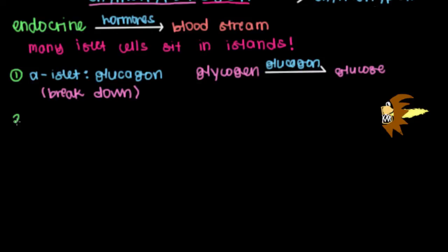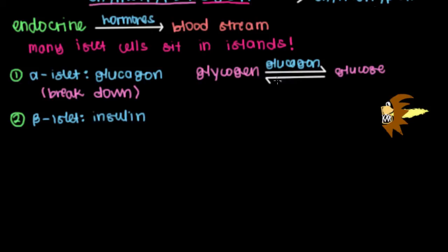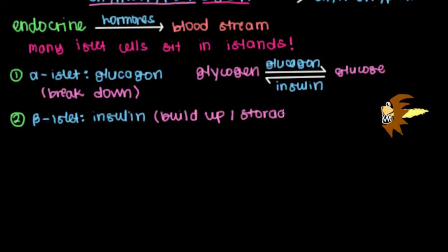The next type of islet cell, and perhaps the most famous, are our beta islet cells. Beta islet cells house and release insulin. Insulin causes the opposite reaction: instead of breaking down glycogen into glucose, insulin causes glucose to be stored or built up into glycogen. And it's not just for carbohydrates — insulin is responsible for the buildup and storage of a whole bunch of macromolecules.